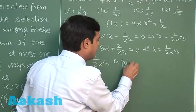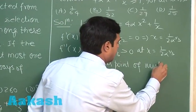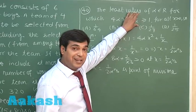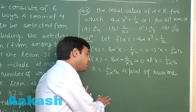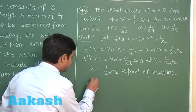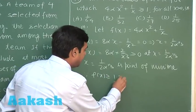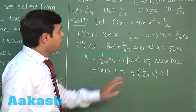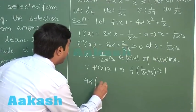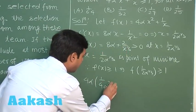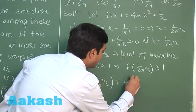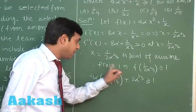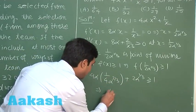This is the local minima. Since f(x) ≥ 1 for all x > 0, the minimum value is also ≥ 1. So f(1/(2α)^(1/3)) ≥ 1. Substituting this value: 4α × 1/(4α)^(2/3) + 2α^(1/3) ≥ 1. Cancelling the 4, we get α^(1/3) + 2α^(1/3) ≥ 1, meaning 3α^(1/3) ≥ 1, so α ≥ 1/27.